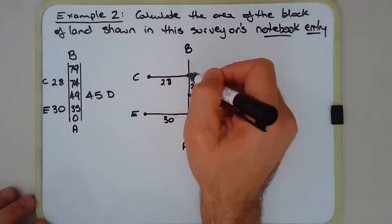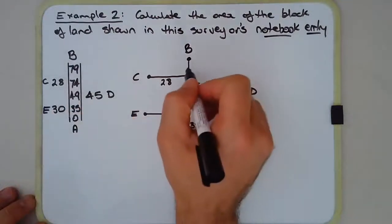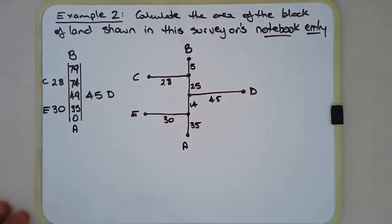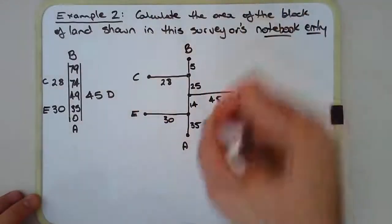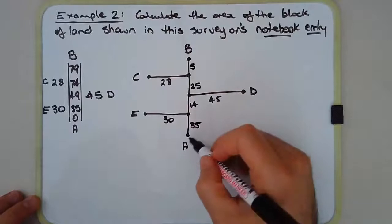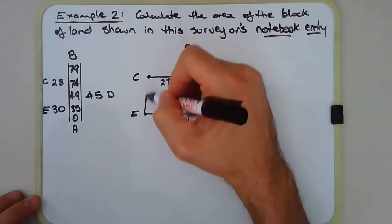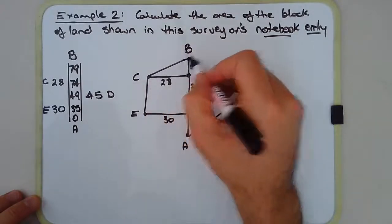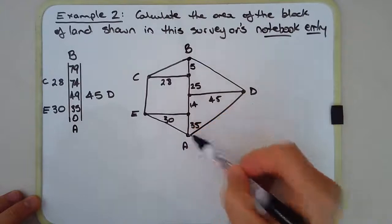And finally, from this vertex to the end of the traverse line, it's just an extra 5 meters. So I'm just going to draw in the 5 there, the measurement there. Now let's join the vertices of the polygon to the, basically the perimeter of the polygon. Now I'll try and do this as neatly as I can. Something like that.